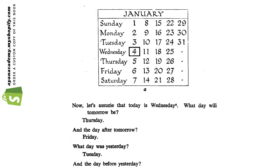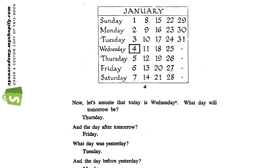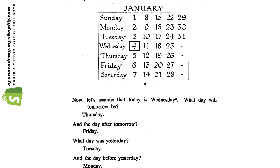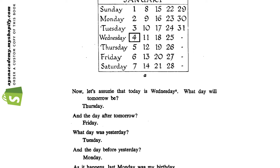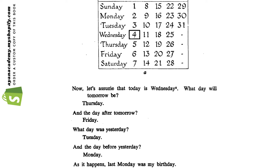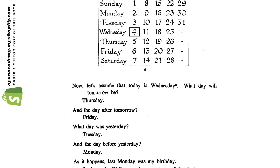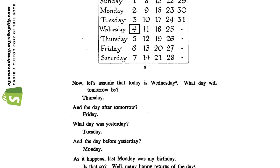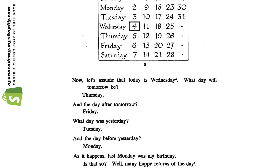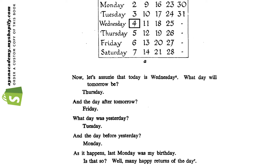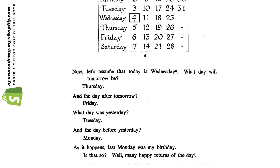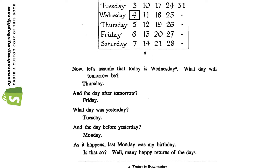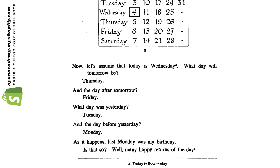Now let's assume that today is Wednesday. What day will tomorrow be? Thursday. And the day after tomorrow? Friday. What day was yesterday? Tuesday. And the day before yesterday? Monday.